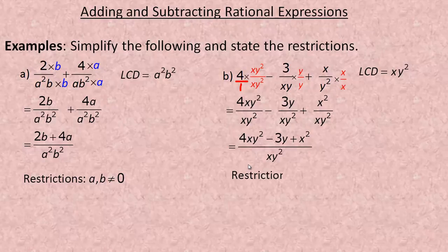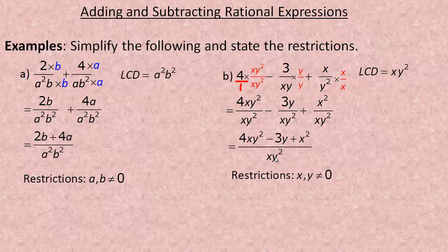For the restrictions: with monomial denominators you almost always get restrictions of 0. If x is 0, then 0 times something squared is 0, making the denominator 0. If y is 0, then 0 squared times whatever x is equals 0. So both x and y cannot equal 0.